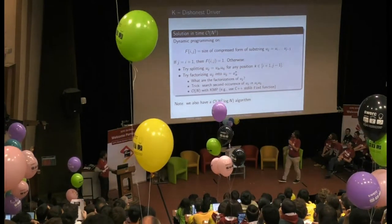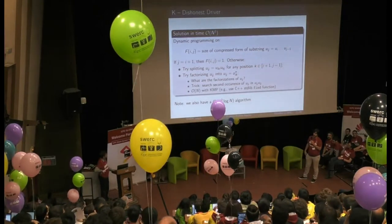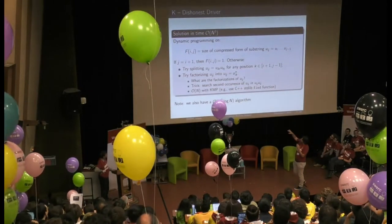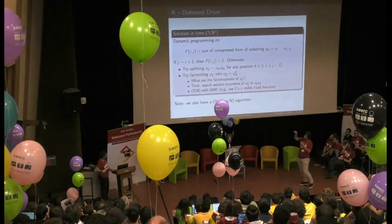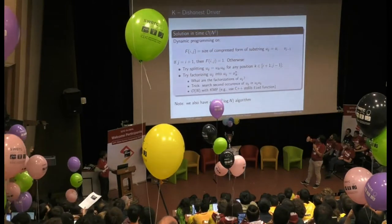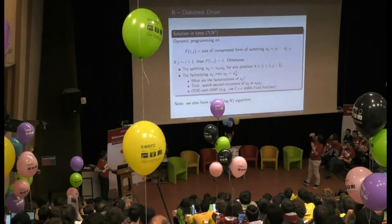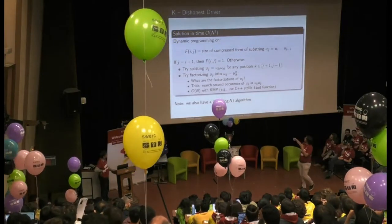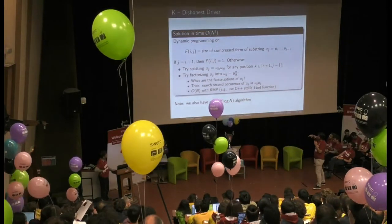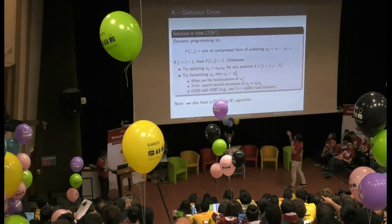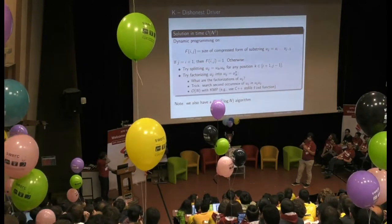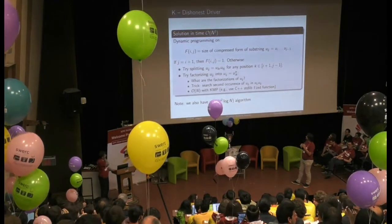We solve this problem using a dynamic programming approach in O(n³). In the DP approach, you compute the size of the compressed form of any substring of the given input string. You compute a function f(i, j) which is the size of the compressed form of the substring u_i to u_{j-1}. If the substring is limited to one character, this is trivial; otherwise you try splitting the string at any possible cut.